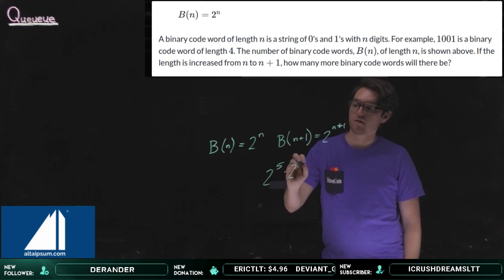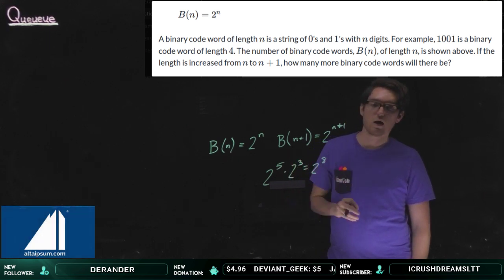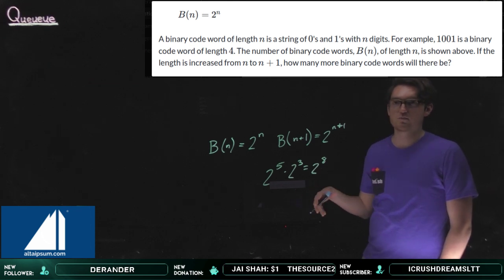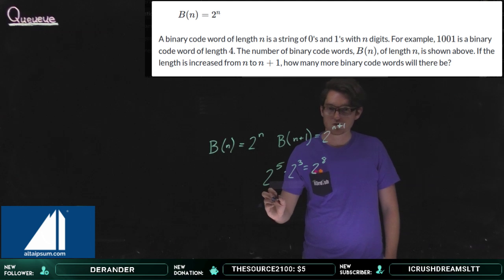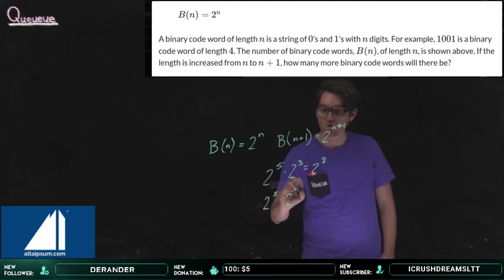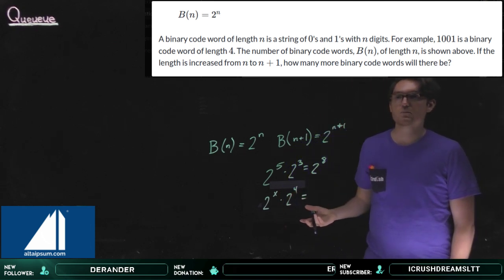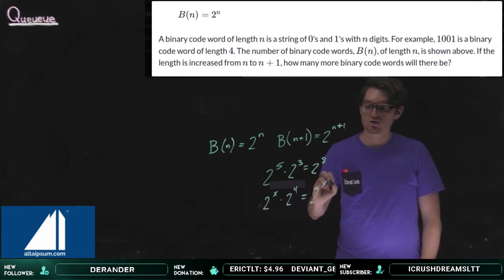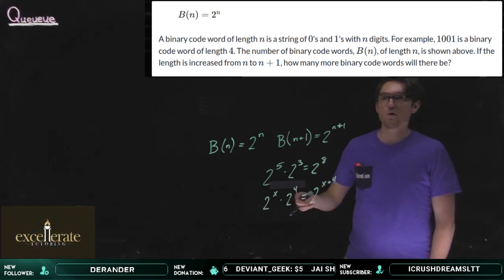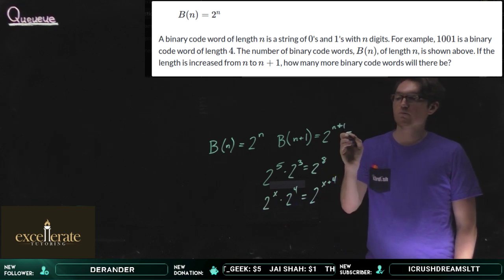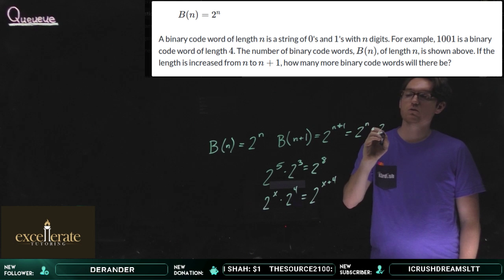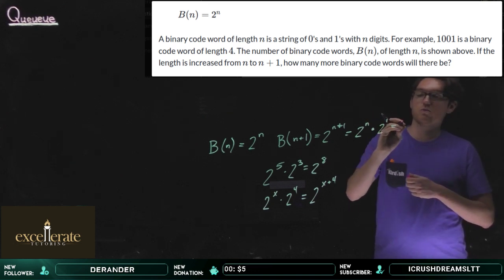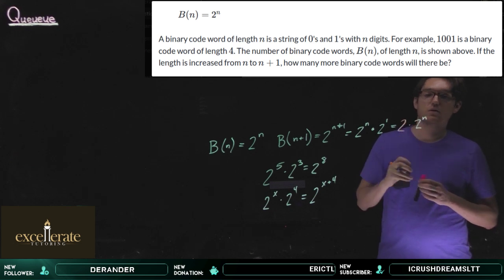2 to the fifth times 2 to the third equals 2 to the eighth — you add the exponents. That's an exponent rule you should have down. So 2 to the x times 2 to the fourth: even with a variable, we still add the exponents, giving us 2 to the x plus 4. Going backwards, 2 to the n plus 1 is also 2 to the n times 2 to the first power.